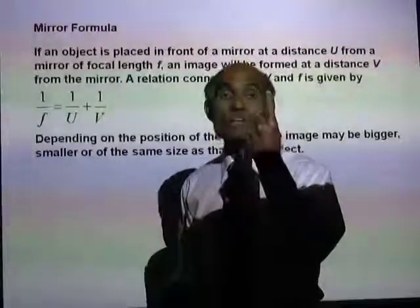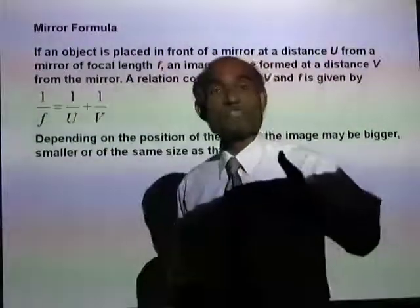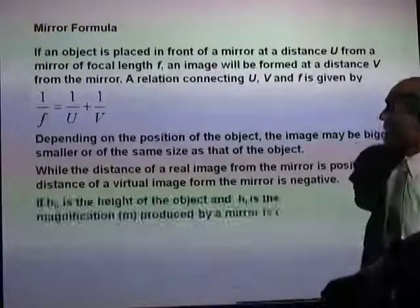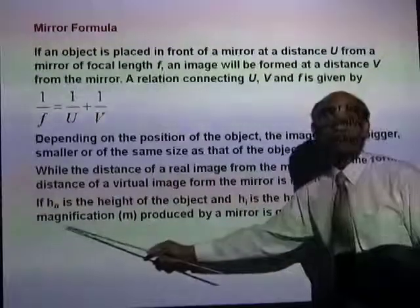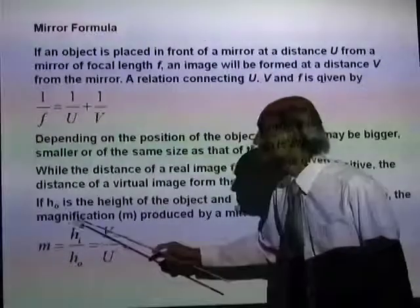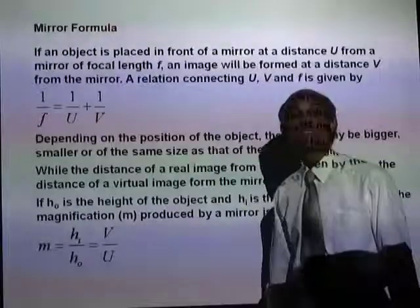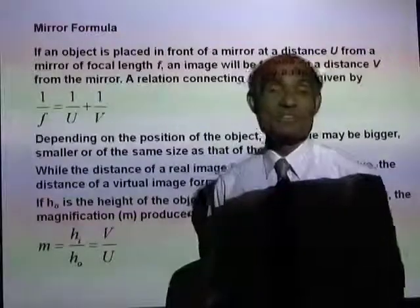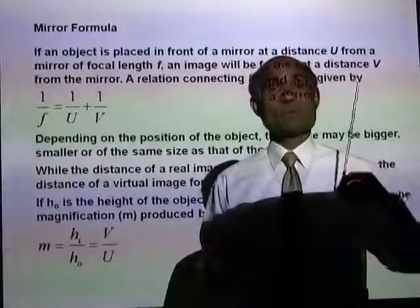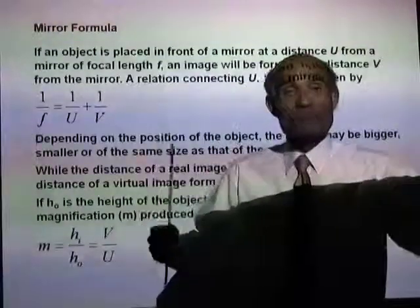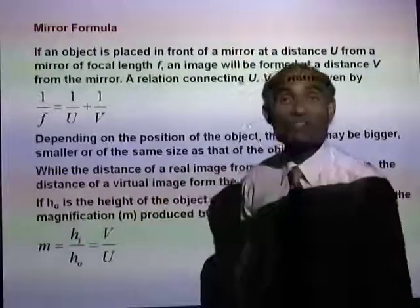If H_O is the height of the object and H_I is the height of the image, then the magnification produced by the mirror is M = H_I / H_O, which equals V / U, the image distance divided by the object distance. In the case of a plain mirror, this magnification is 1. But in curved mirrors, you can create bigger or smaller images, making magnification a relevant quantity.